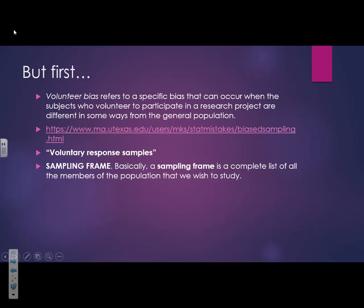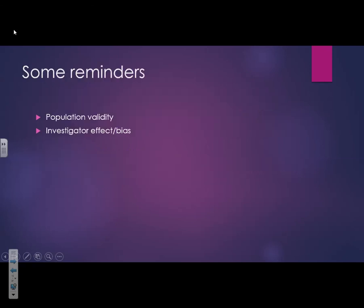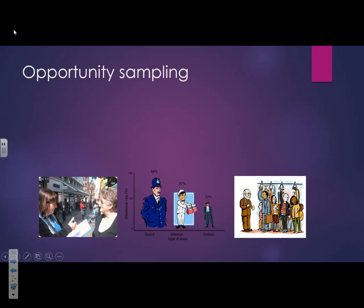Sampling frame is a complete list of all members of the target population — a useful technical term. Also remember population validity: if a sample is not representative of the target population, it lacks population validity and we can't confidently apply the results. If it's high in population validity, the sample closely matches the target population; if it's low, the sample is biased. Investigator effect or investigator bias is when the investigator's behaviour, consciously or unconsciously, influences the results.